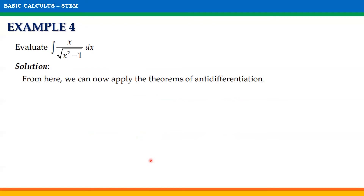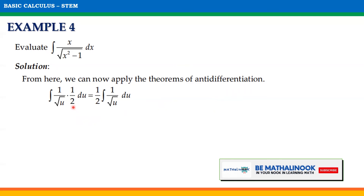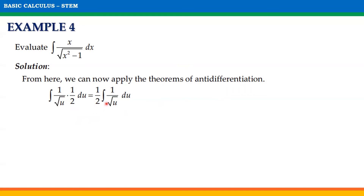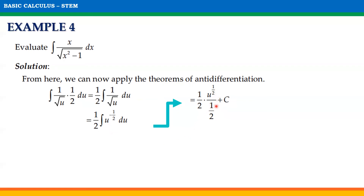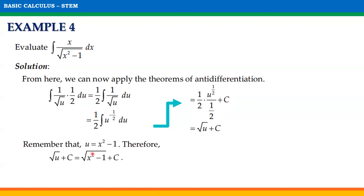From there, we can now apply the theorems of anti-differentiation. Since we have the constant 1/2, it will become the multiplier of our indefinite integral, giving (1/2) times the indefinite integral of 1/√u du. We can express 1/√u as u^(−1/2). Adding 1 to the exponent and dividing by the resulting exponent, we will have (1/2) · u^(1/2)/(1/2) + C. Multiplying 1/2 and the reciprocal of 1/2, we get √u + C. Since u = x² − 1, our final answer will be √(x² − 1) + C.